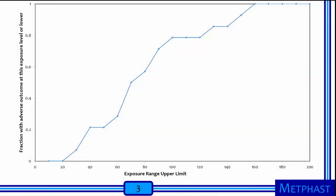Create an exposure response curve by plotting the cumulative frequency of the adverse outcome on the vertical axis against the upper end of each exposure range on the horizontal axis. The result should look something like this.